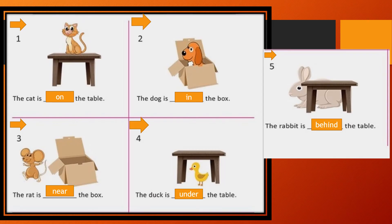Now children, look at these pictures and solve it with me. The first one: the cat is on the table. The dog is in the box. The rat is near the box. The duck is under the table. The rabbit is behind the table.